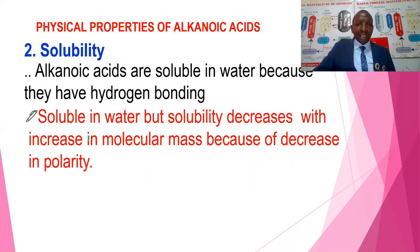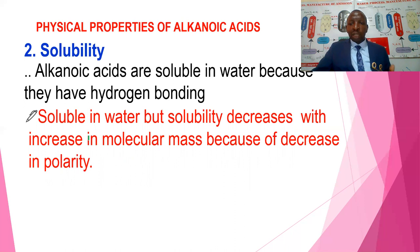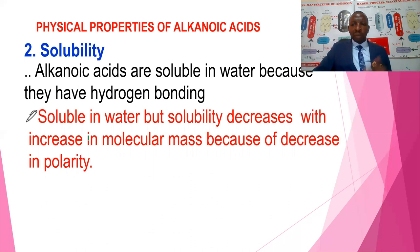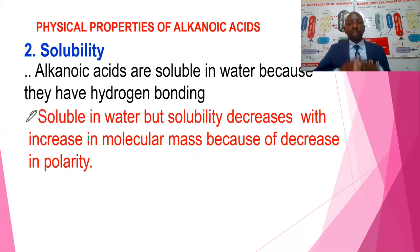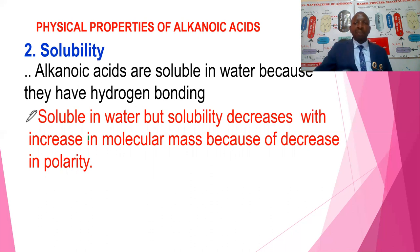Solubility: alkanoic acids are soluble in water because they contain hydrogen bonding. All compounds with hydrogen bonding are soluble in water. For example, sugar is a molecular compound but soluble in water because it has hydrogen bonding — the same with alkanol and glucose. These are molecular compounds but soluble in water because they contain hydrogen bonding, which makes them a little bit polar. Solubility decreases with increased molecular mass because of a decrease in polarity — the higher the molecular mass, the lower the polarity.